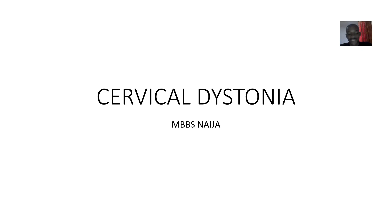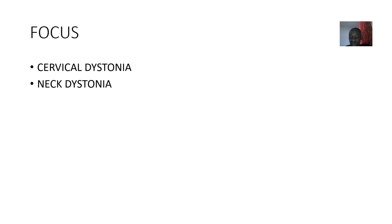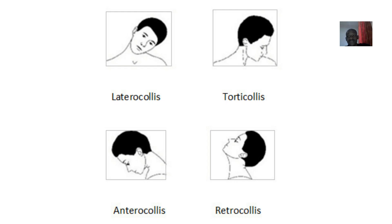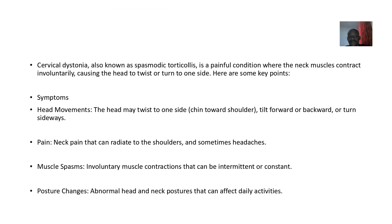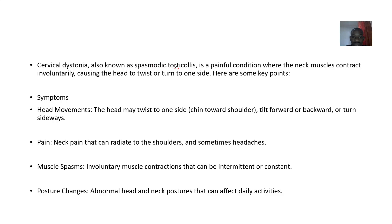We'll be talking about cervical dystonia now. Cervical dystonia is a concept that has a lot of names. It is also known as neck dystonia, and it is also known as spasmodic torticollis. So we have three names: cervical dystonia, neck dystonia, and spasmodic torticollis. It is a painful condition where the neck muscles contract involuntarily.